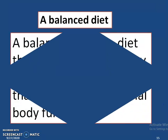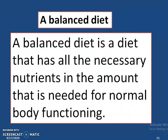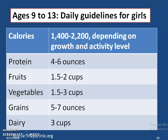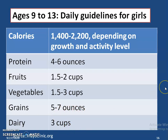What is a balanced diet? A balanced diet is a diet that has all the necessary nutrients in the amount needed for normal body functioning. According to mayoclinic.org, children between the age of 9 to 13 — specifically girls — should have 4 to 6 ounces of protein, 1.5 to 2 cups of fruits, 1.5 to 3 cups of vegetables, 5 to 7 ounces of grains, and 3 cups of dairy, depending on the physical and mental activities they do.